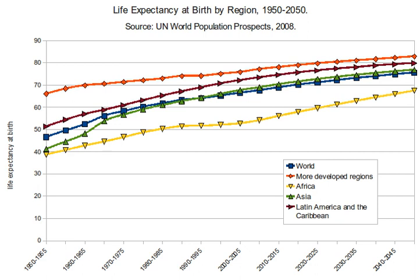In developed countries, the number of centenarians is increasing at approximately 5.5% per year, which means doubling the centenarian population every 13 years, pushing it from some 455,000 in 2009 to 4.1 million in 2050. Japan is the country with the highest ratio of centenarians — 347 for every 1 million inhabitants in September 2010. In the United States, the number of centenarians grew from 32,194 in 1980 to 71,944 in November 2010, or 232 centenarians per million inhabitants.